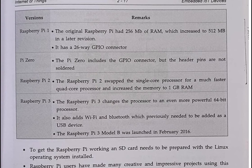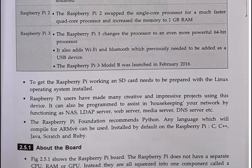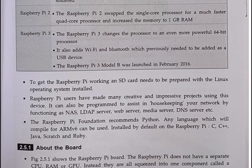The Raspberry Pi is capable of doing everything a normal PC or laptop can do. To get it working, an SD card needs to be prepared with the Linux operating system installed. Since there is no internal storage device in the Raspberry Pi, we load the OS onto an SD card and insert it. We can also connect a USB hard drive or pen drive using one of the four USB ports.